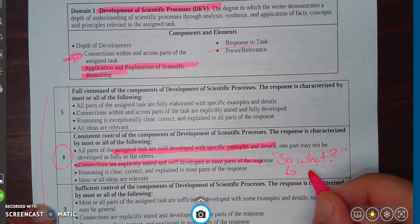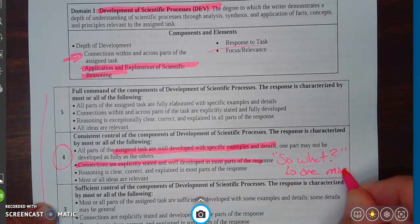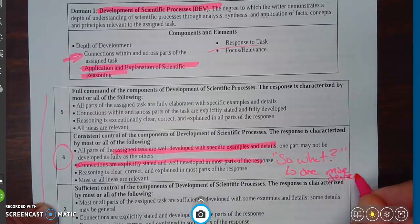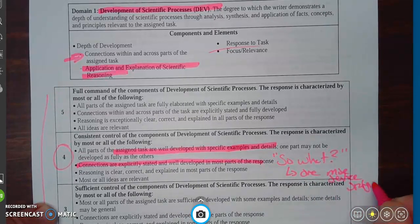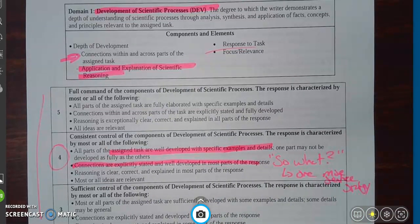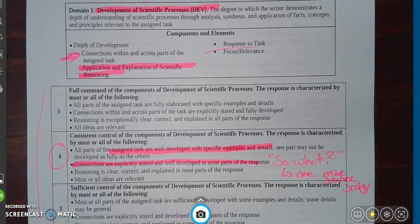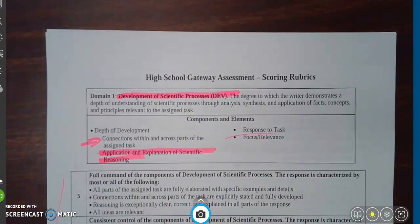It's also kind of the idea there's a one more sentence strategy, and that's linked in the index that you'll see in the description. But the connections are explicitly stated and well-developed in most parts of the response. So that's showing the reader that you understand the connections between these scientific processes and how you're answering the question with the examples and details. So that is domain one.